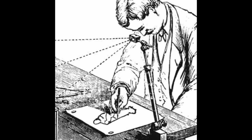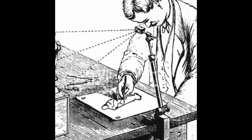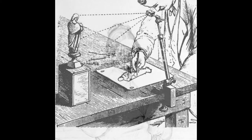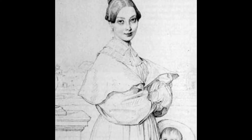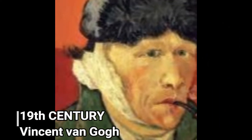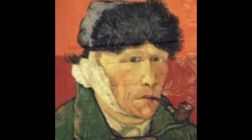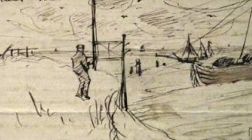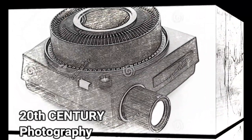Around 1850 the camera lucida was invented; it uses a prism to view the subject and the drawing surface at the same time. The problem with this device is the drawing can only be as large as your arm can reach. Here are some early examples of camera lucida drawings. This is a fact that surprised me: Vincent van Gogh used an aid for some of his drawings. We know this because he documented the device in some of his letters to his brother and demonstrated how he used it in others.